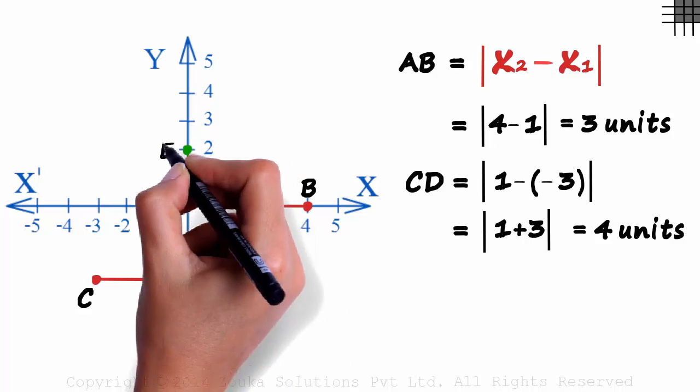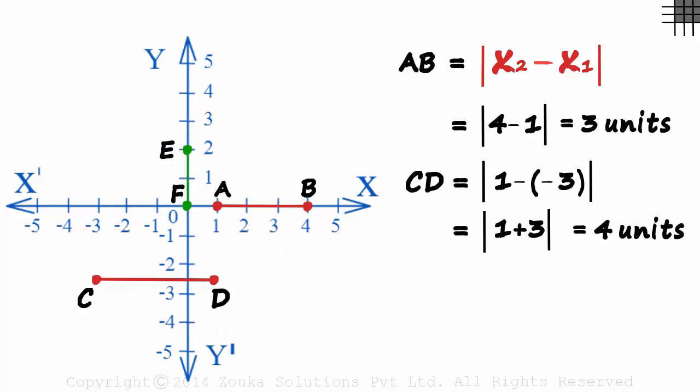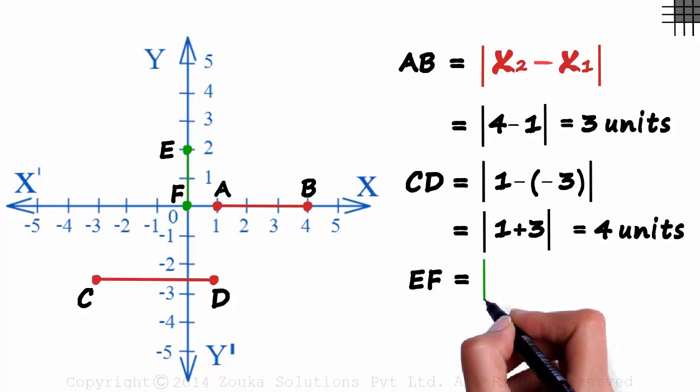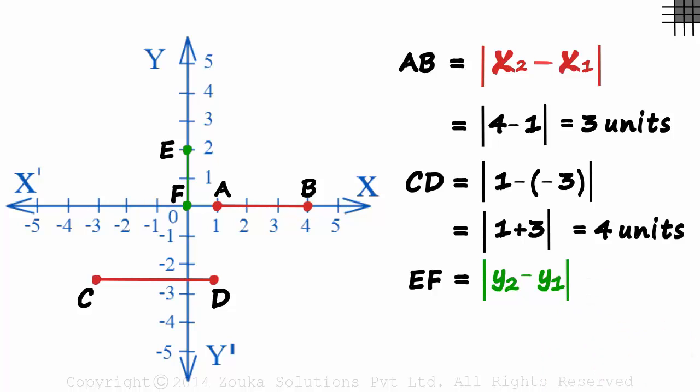What's the length of line segment EF? When we say length of EF, we mean the distance between E and F. What will EF be equal to? It lies entirely on the y-axis. The distance between any two points on the y-axis is the absolute value of the difference in the y-coordinates. The y-coordinates of E and F are 2 and 0. EF will be the absolute value of 2 minus 0, 2 units.